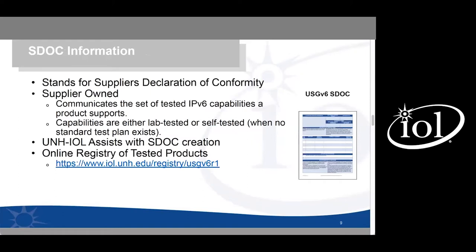The S-Doc is a document that only applies to the USGv6 test program. It's essentially a way to communicate a set of IPv6 capabilities a product supports. Unlike Ready Logo, USGv6 has a very large set of capabilities a product can claim support for. These capabilities can either be lab-tested or self-declared depending on whether a test plan exists. If a test plan does exist, testing must be performed in an ISO-accredited test lab. The UNH IOL can assist with creating an S-Doc and maintains a list of USGv6 tested products on our website.